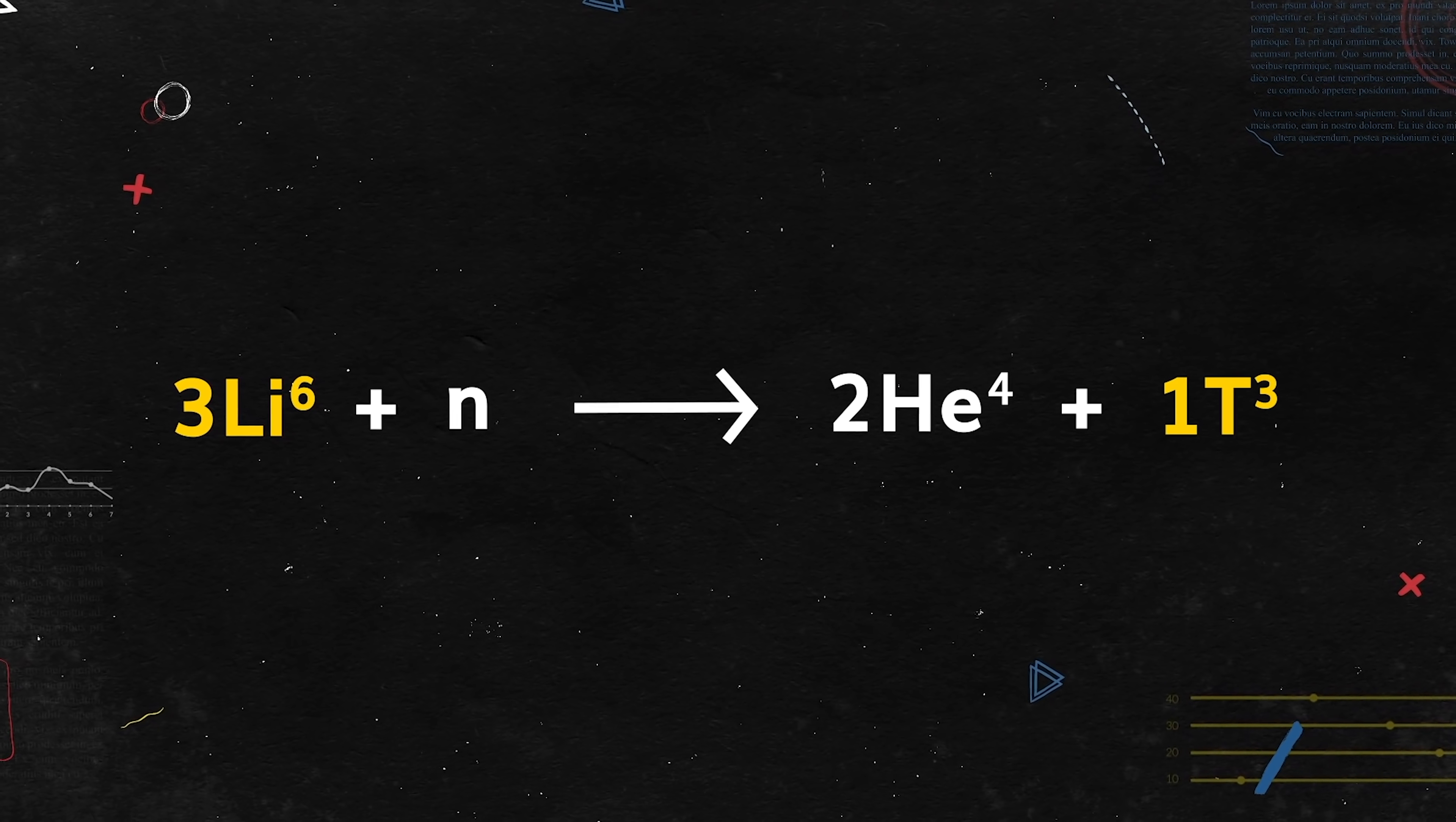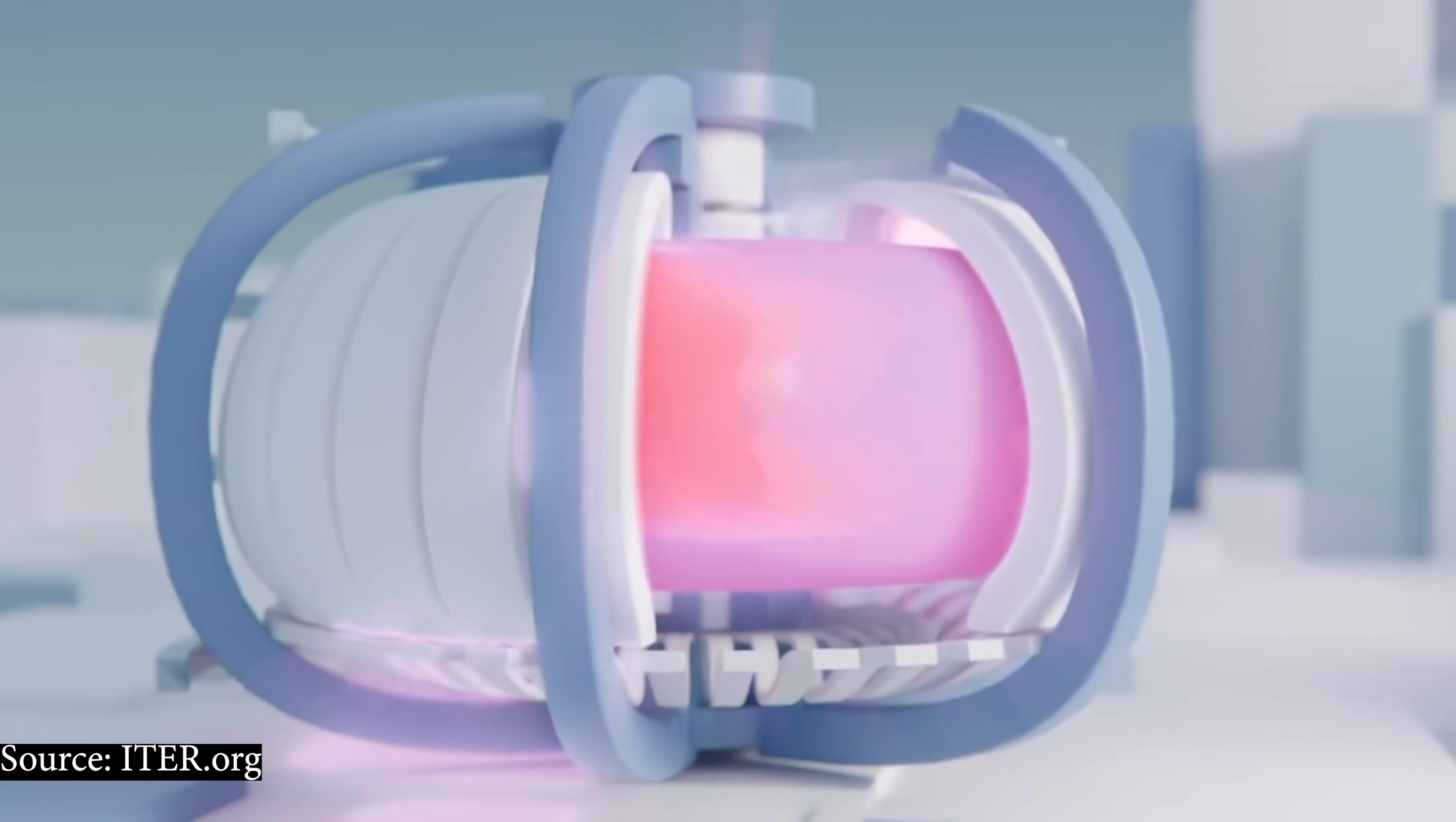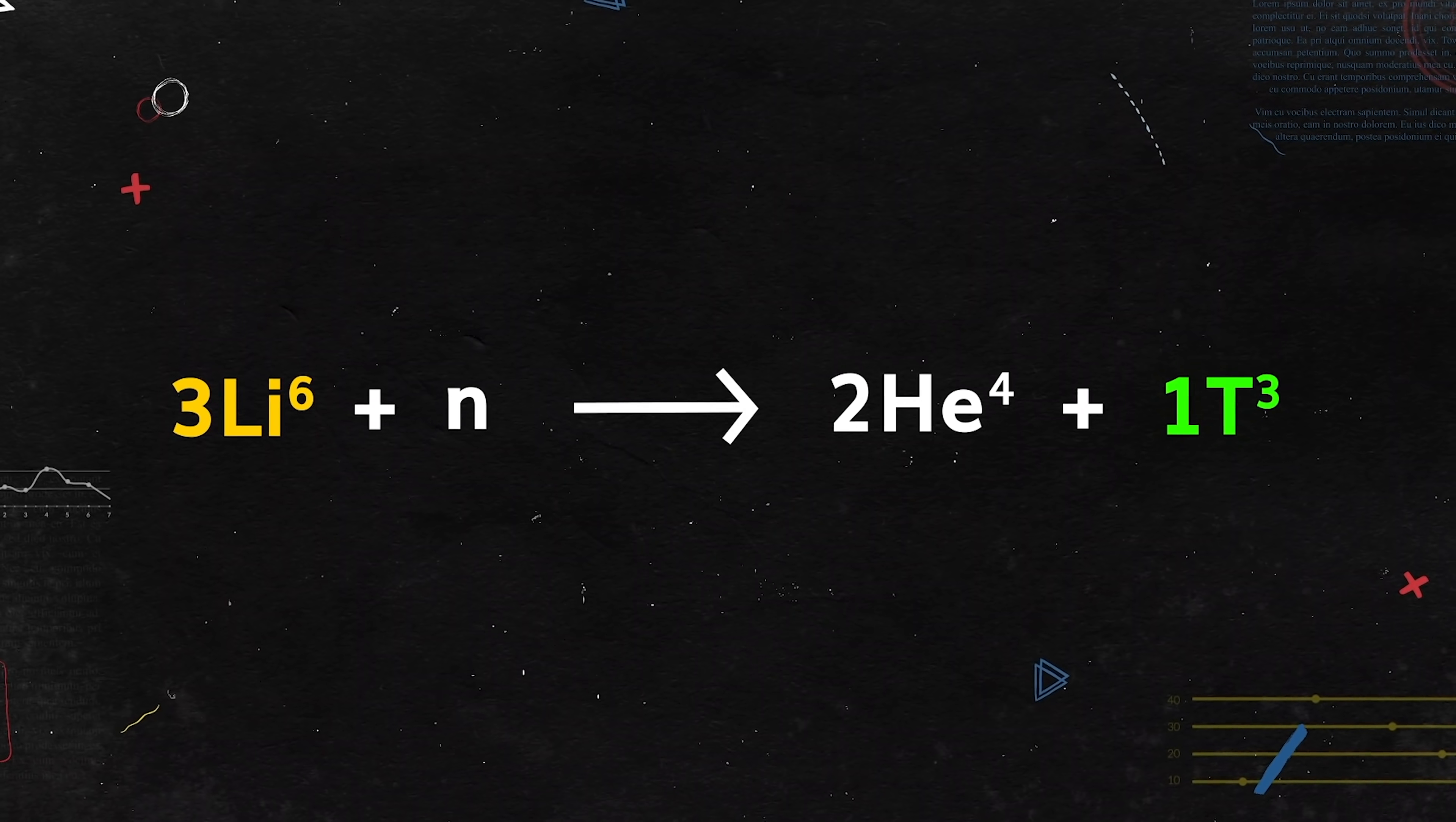No video about world-changing technology is complete without a look at the obstacles they face. The first here is tritium. Tritium is formed from lithium when it's hit by a neutron. If you remember the fusion video, ITER actually plans to use a lithium blanket to breed tritium as fuel. Tritium is radioactive so you don't want it leaking out. Even though it is weakly radioactive, no regulator will allow it.